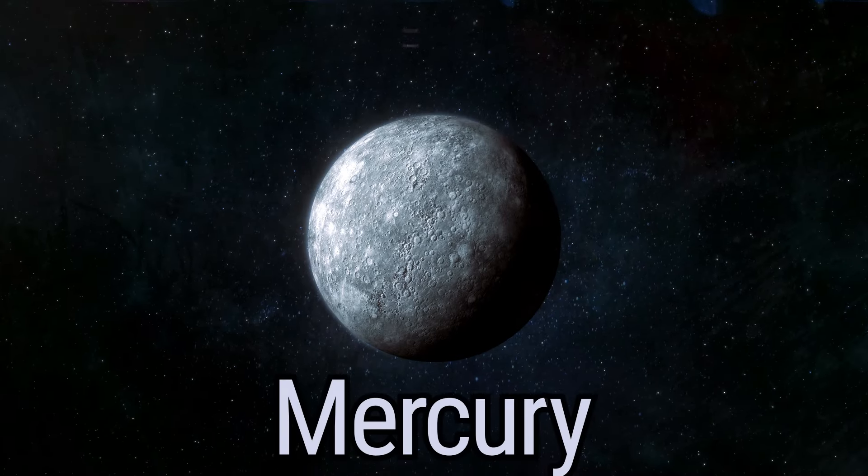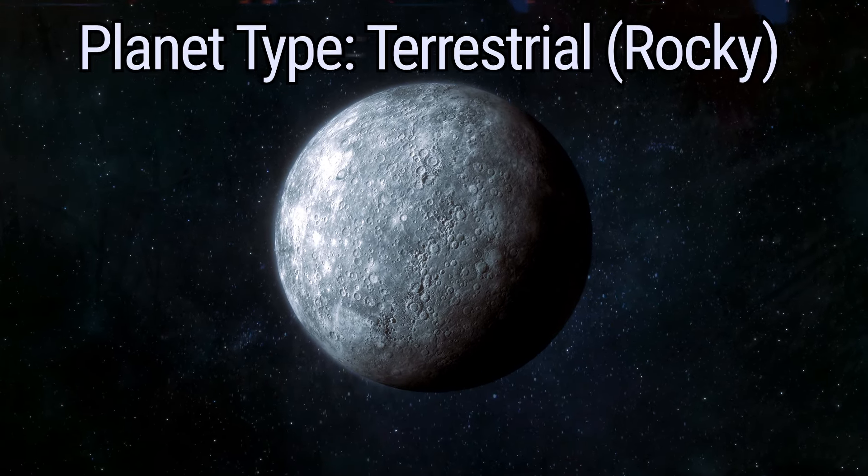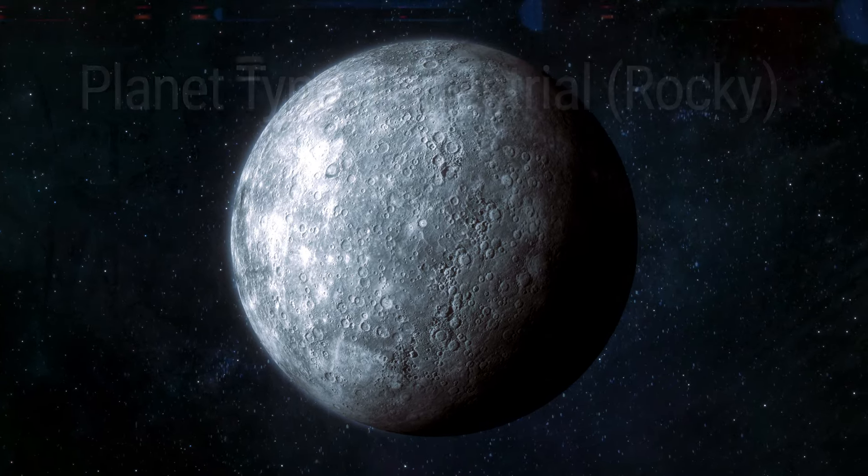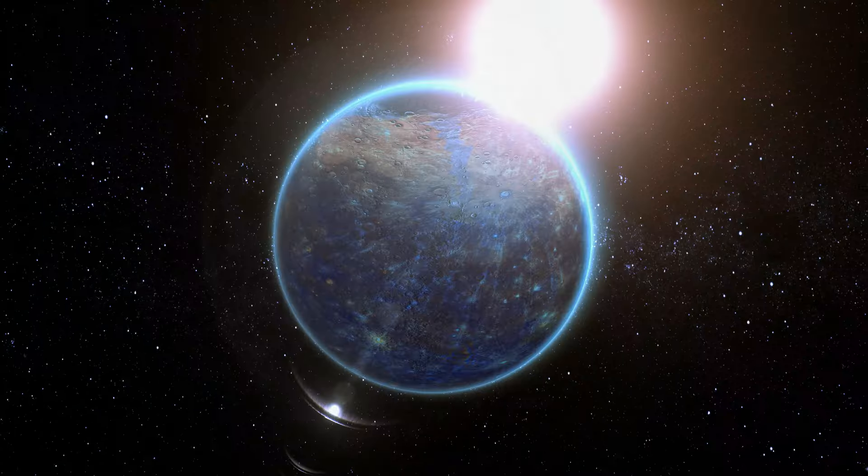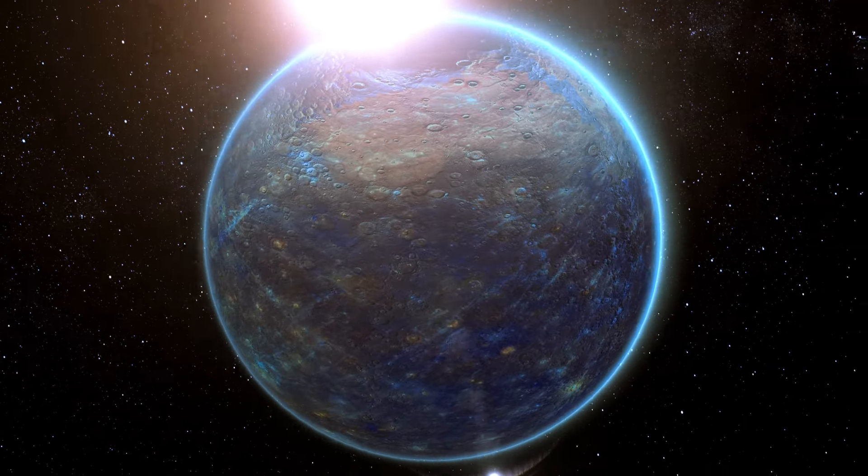Our first stop is Mercury. Mercury is a terrestrial or rocky-type planet, named after the Roman messenger of the gods. Fittingly, it races around the sun faster than any other planet.